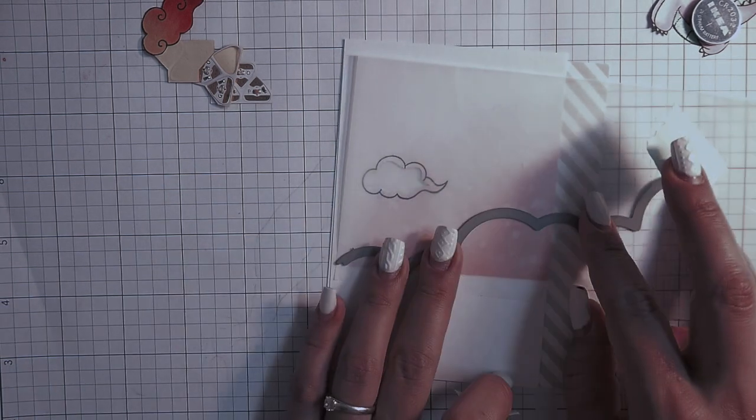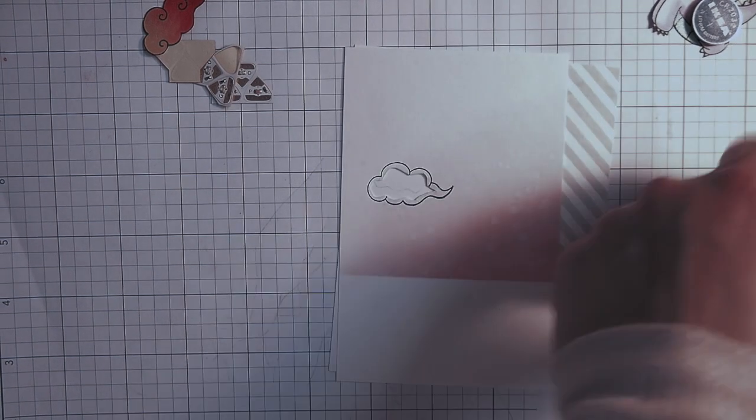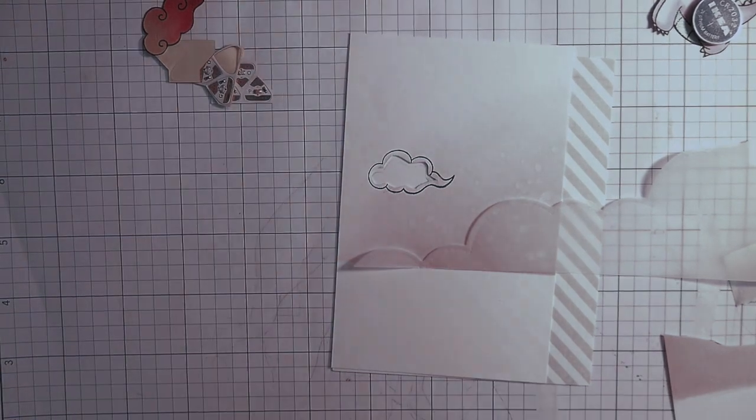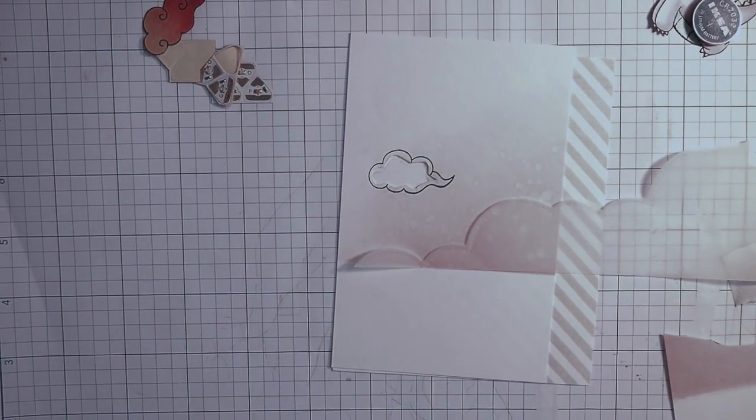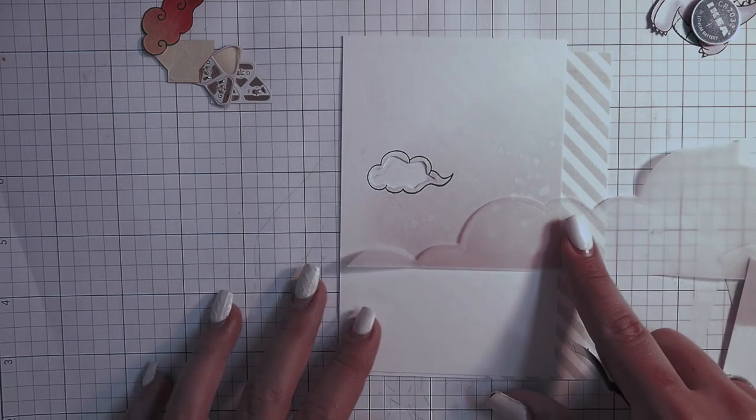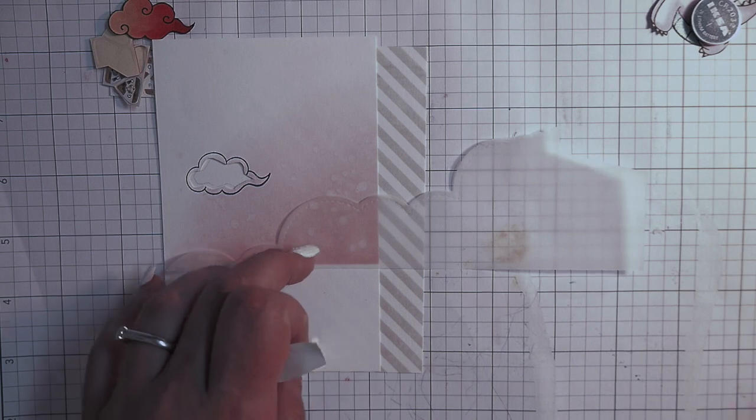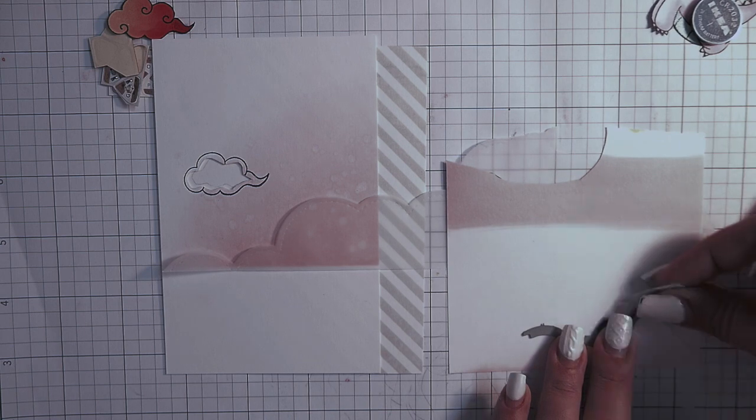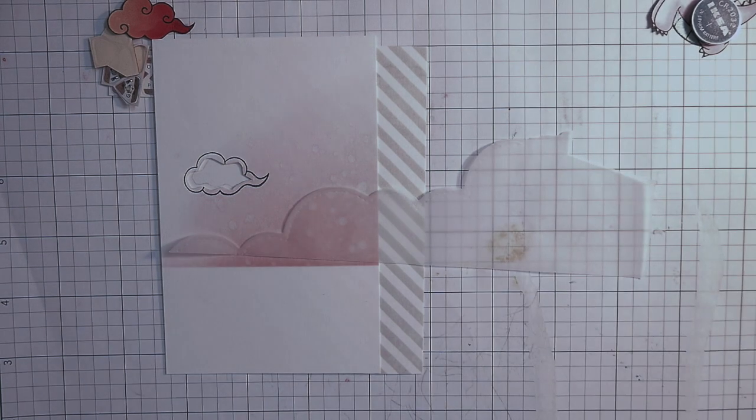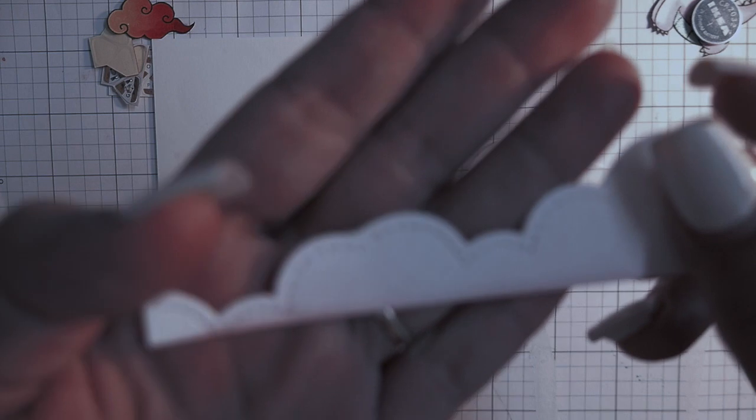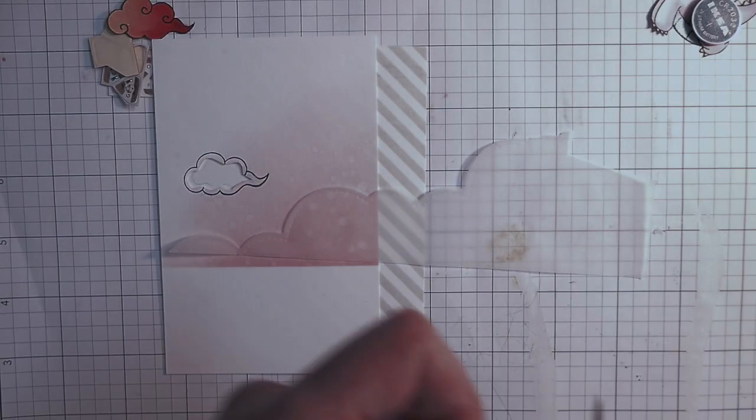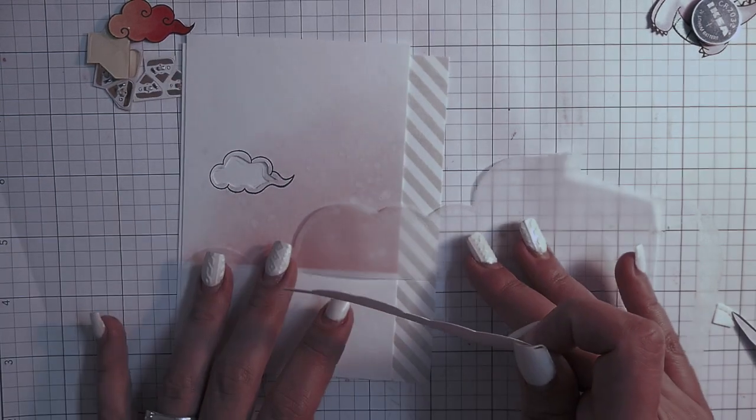Now I'm using the Lawn Fawn Puffy Clouds die to create my clouds. I'm cutting it out from vellum and one time from my ink blended white cardstock panel. I did here some partial die cutting because I wanted the cloud to be how I wanted it to be. I think it makes sense, right?